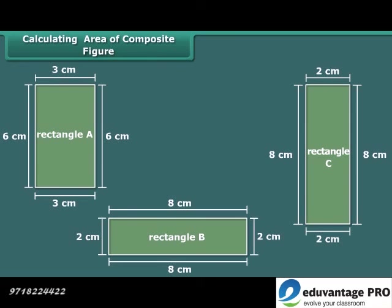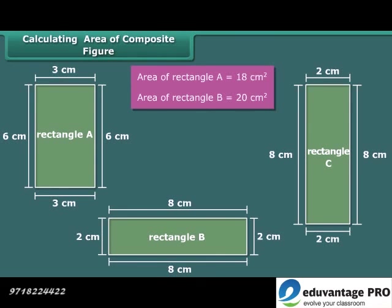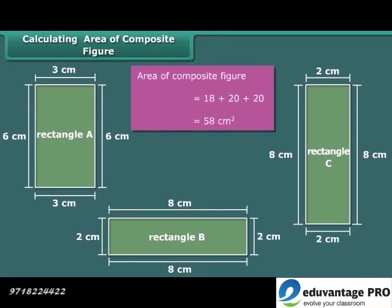Here we can divide the given composite figure into 3 rectangles. Area of rectangle A is 18 square centimeters. Areas of rectangles B and C are the same, that is 20 square centimeters each. Thus, the area of the composite figure is 18 plus 20 plus 20, which is equal to 58 square centimeters.